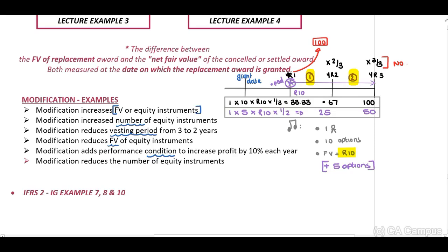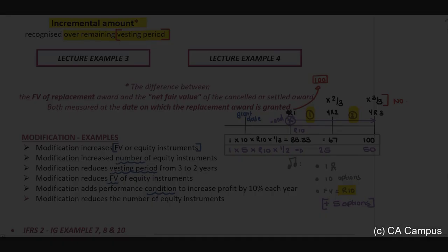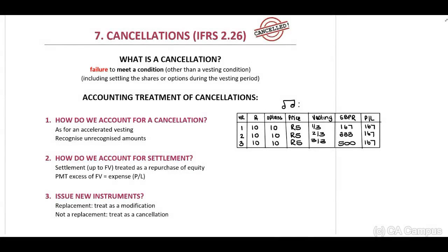When there's a modification, you will only look at the remaining period and calculate our incremental amount. Now, how will we treat a cancellation? We first need to ensure we understand what a cancellation is in terms of IFRS 2. This will be the failure to meet a condition other than a vesting condition, including settling shares or options during the vesting period. The accounting treatment of cancellations involves several different approaches.